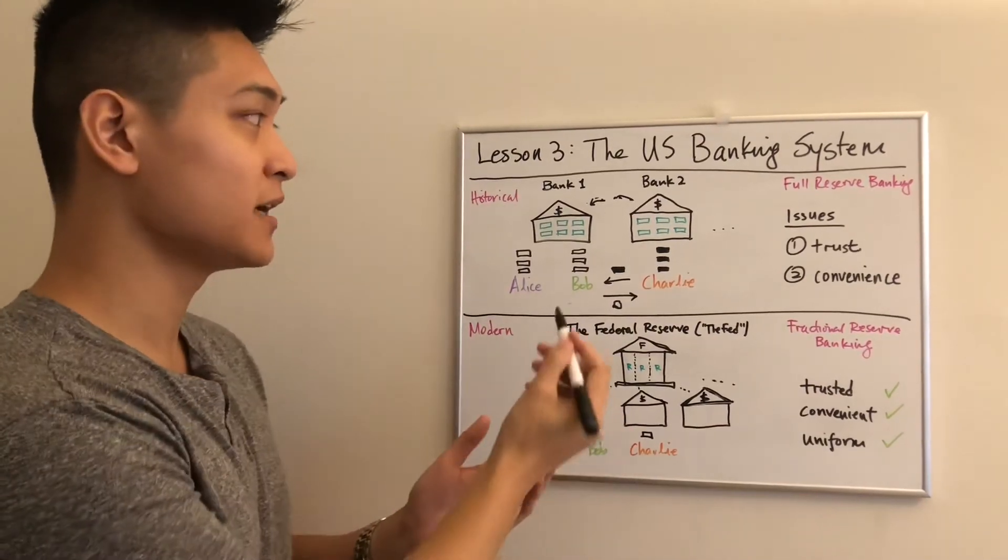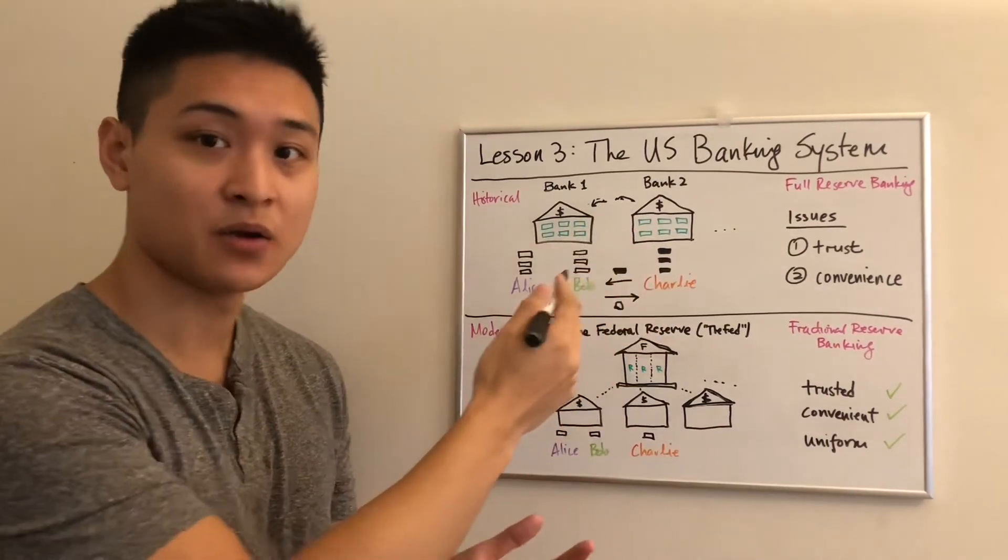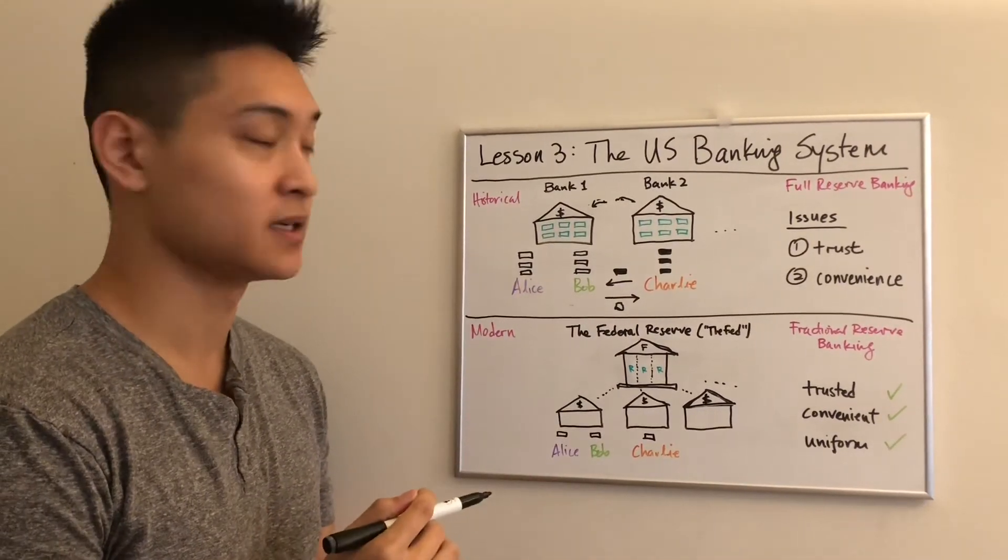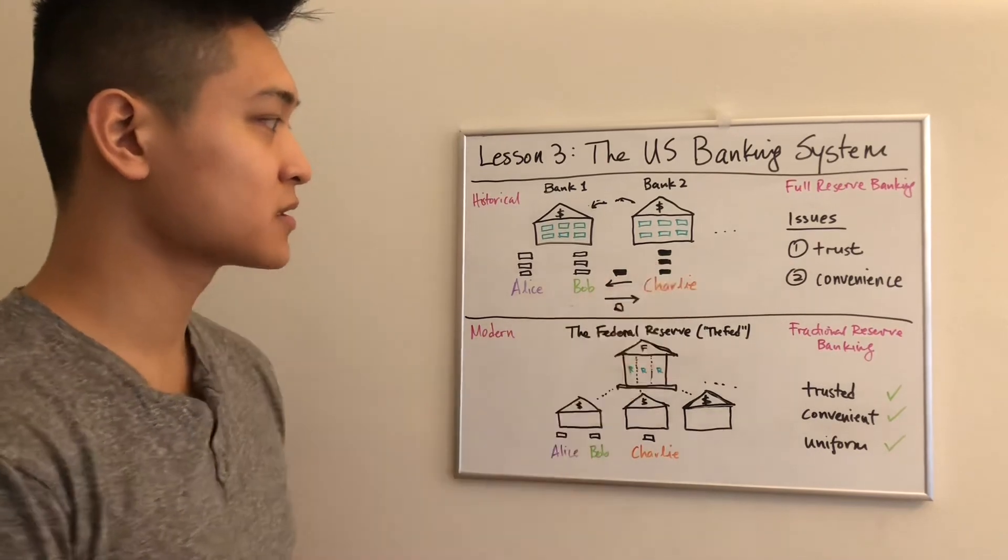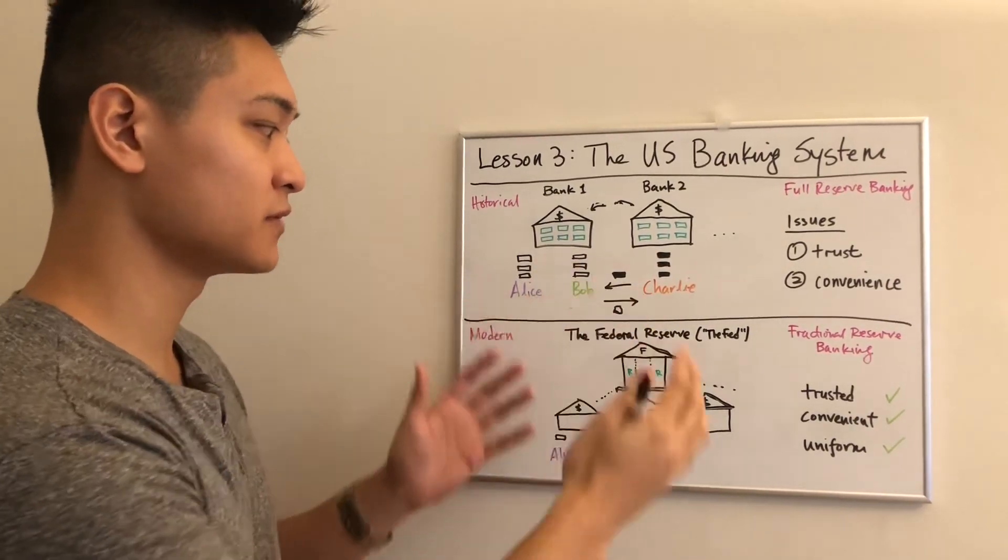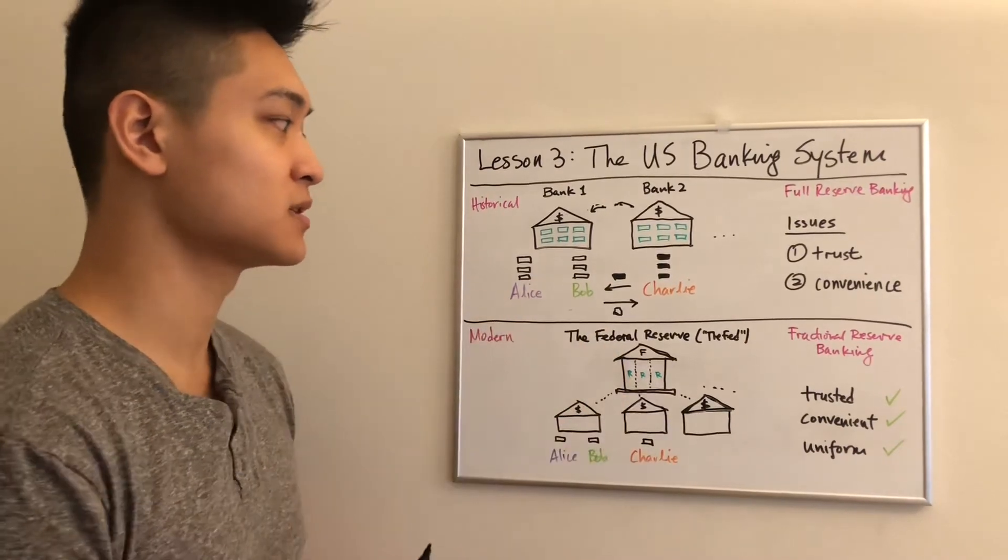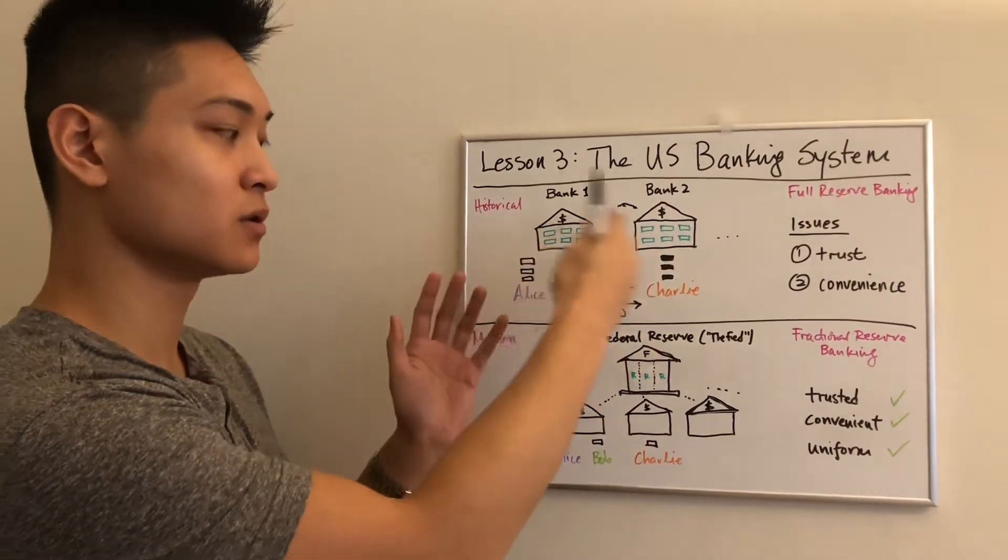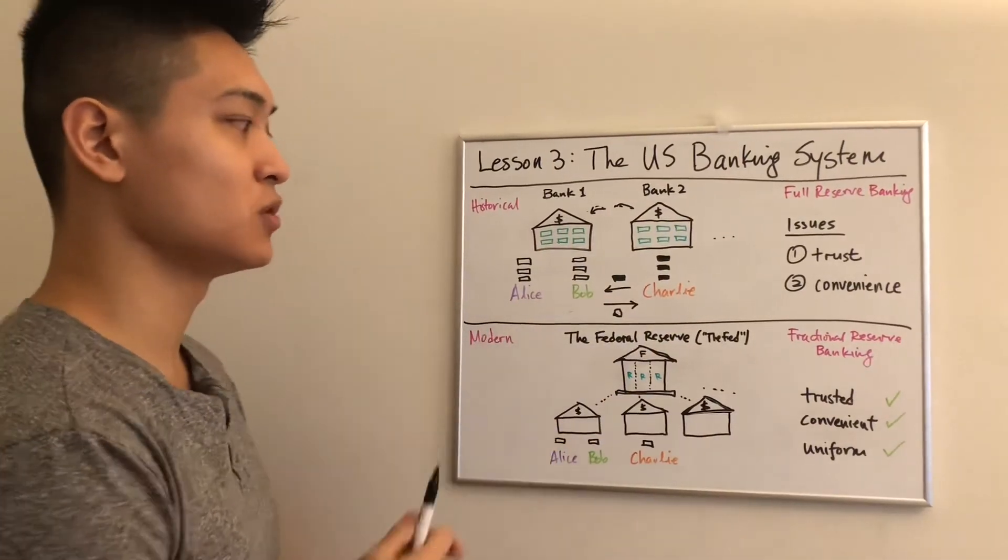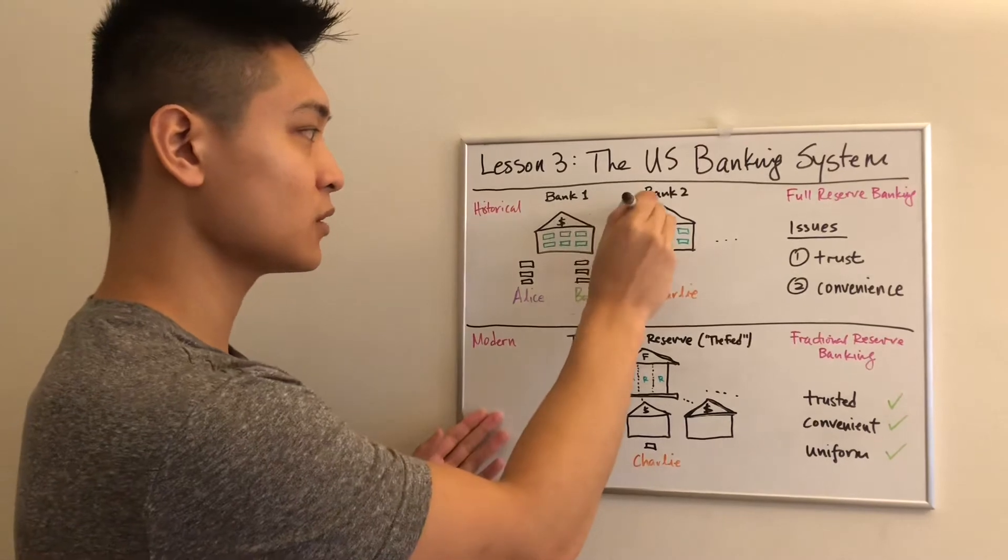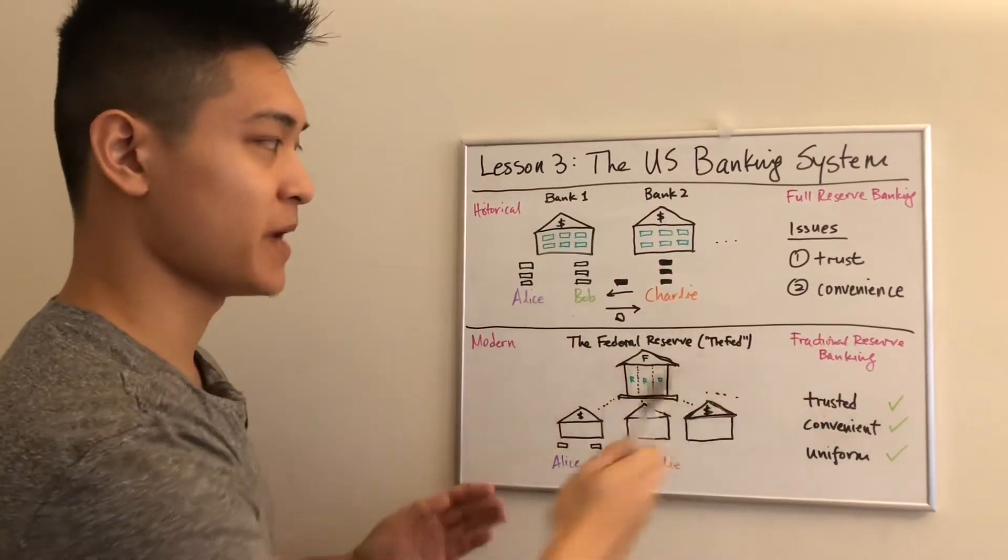And who knows if there were thieves in the middle of the mountain waiting to jump out and steal all this gold from the armored vehicle. So there were some issues here. As money evolved and we became based on the numbers system where we have numbers in accounts and we got rid of all this paper and gold, we eventually moved to the modern banking system, which is a fractional reserve banking system.